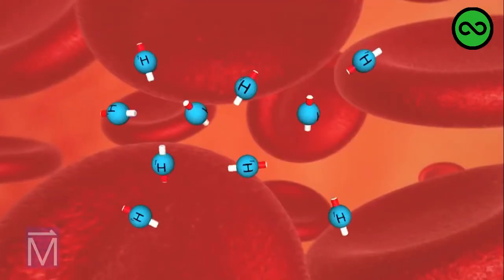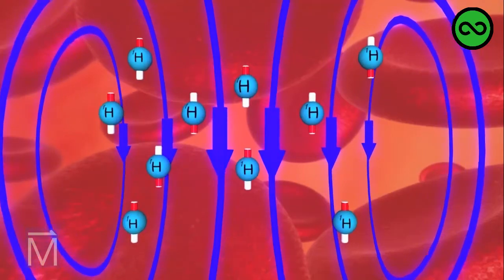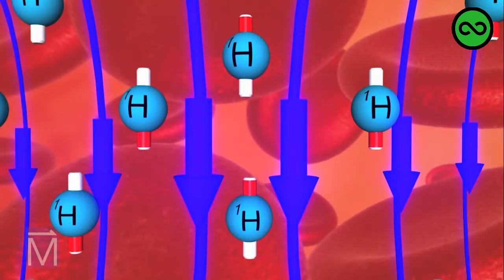Suddenly, the axes of the hydrogen protons realign with the powerful magnetic field and spin, just like a top, at a specific frequency, its resonance frequency, that is a function of the strength of the magnetic field, represented here by blue lines.